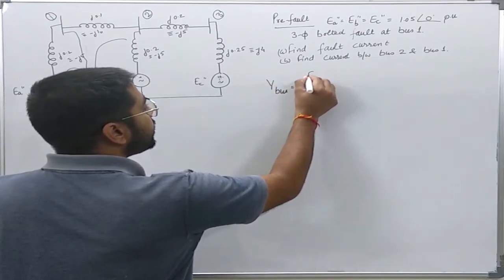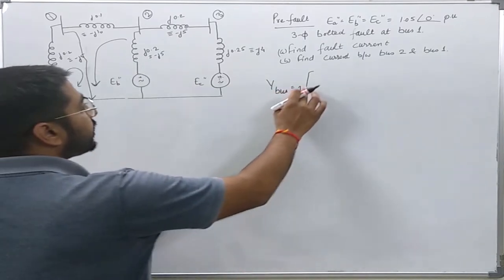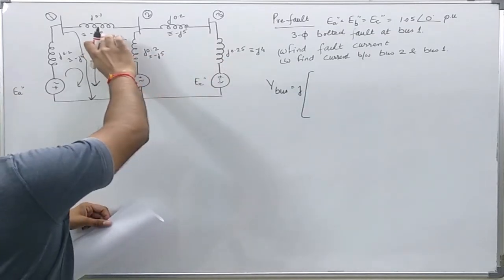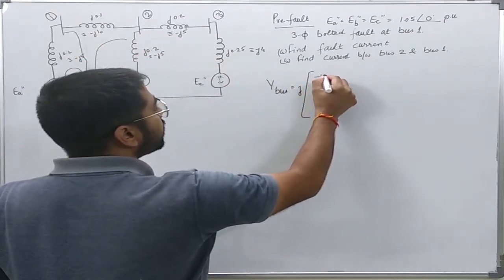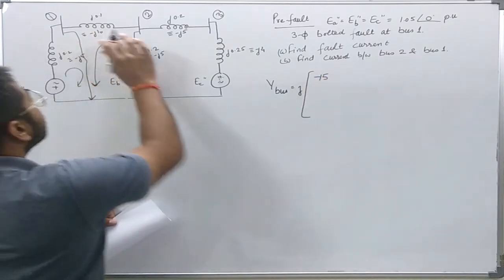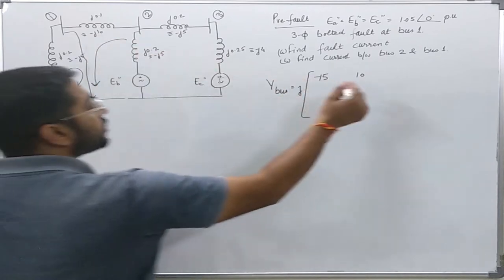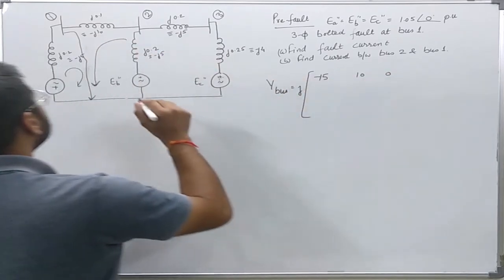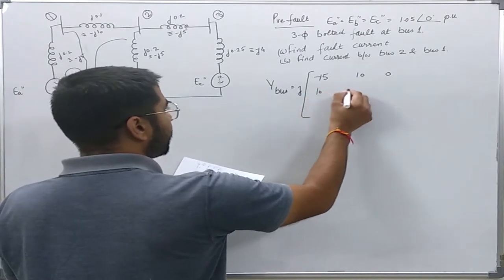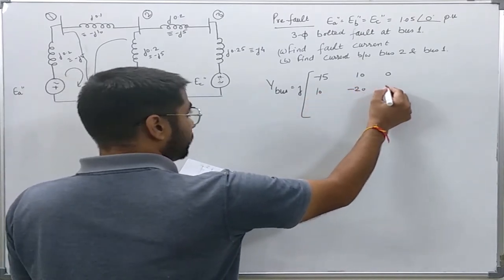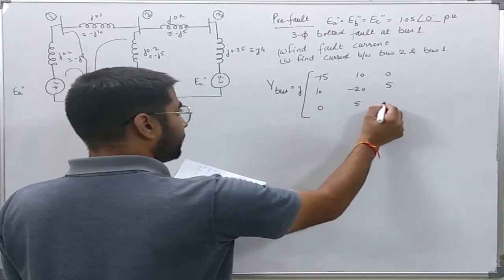J is common. So y11 is nothing but minus 10, minus 5, minus 15. y12 is just 10. y13 is 0. Similarly, I will write other rows: 10, minus 20, 5, 0, 5, minus 9.